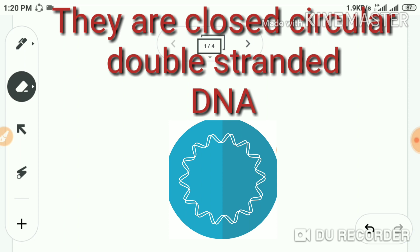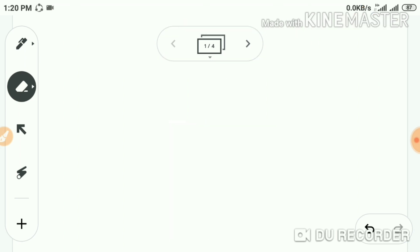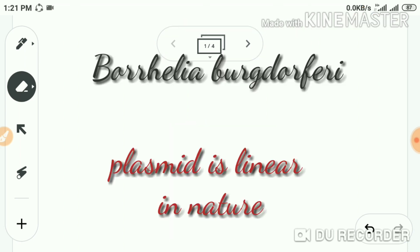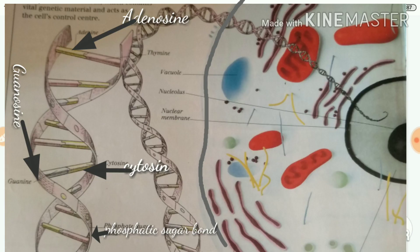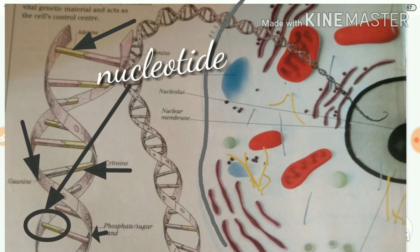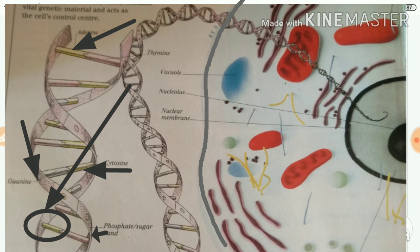There is a special case: in Borrelia burgdorferi, a bacterium whose plasmid is linear in nature. Regarding size, plasmid size can vary from 1 kilobase pair to 400 kilobase pairs. The building blocks of DNA are nucleotides. DNA is a double helical, ladder-like structure where the steps are made up of base pairs, so the length of DNA is measured by counting the number of base pairs.